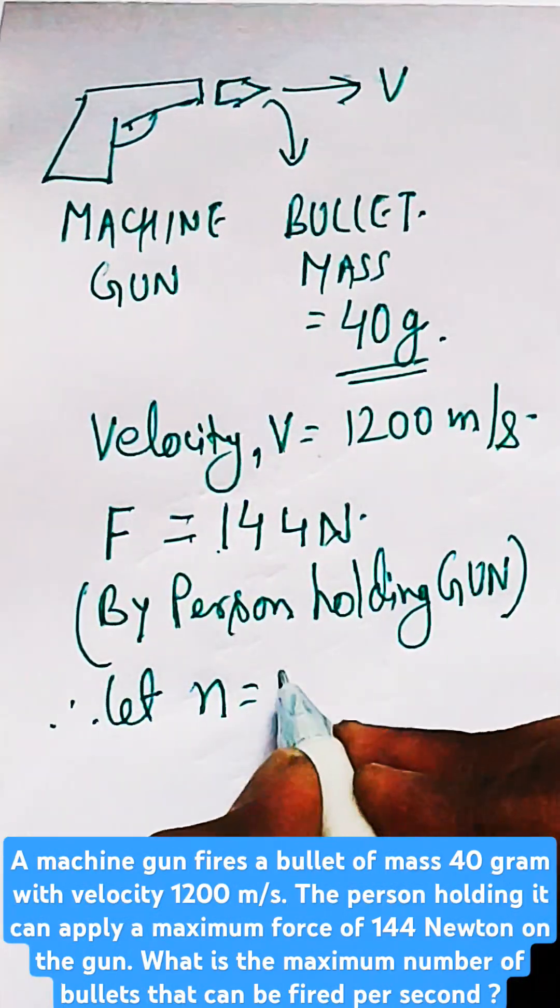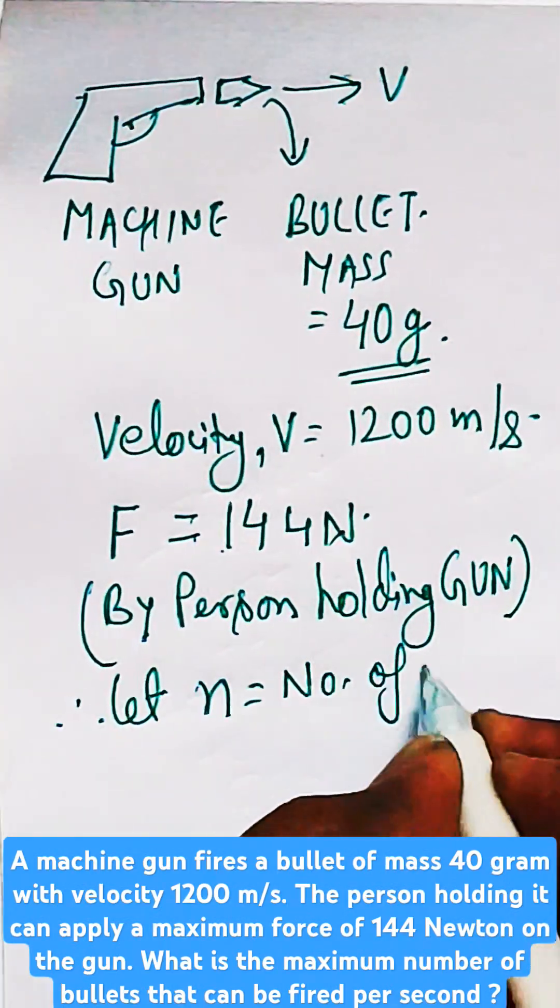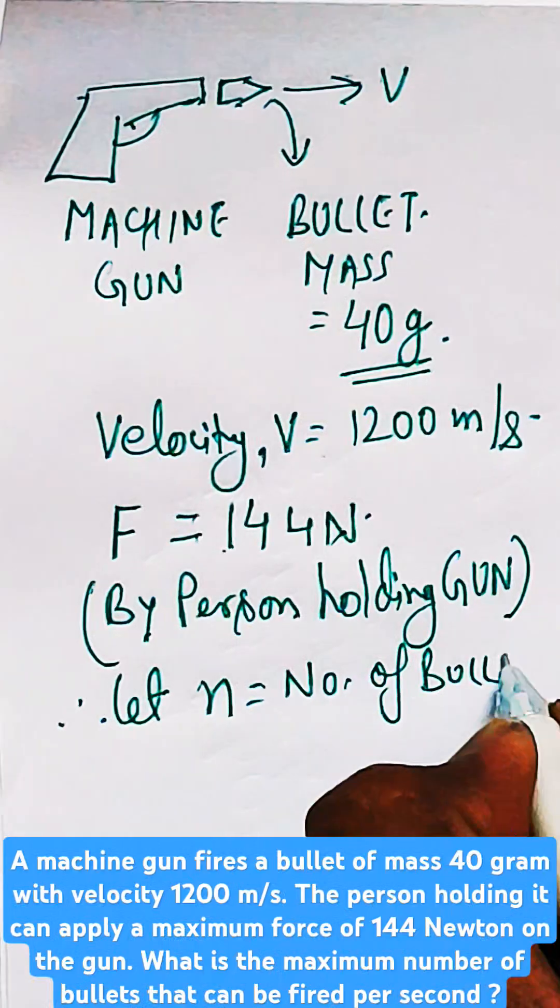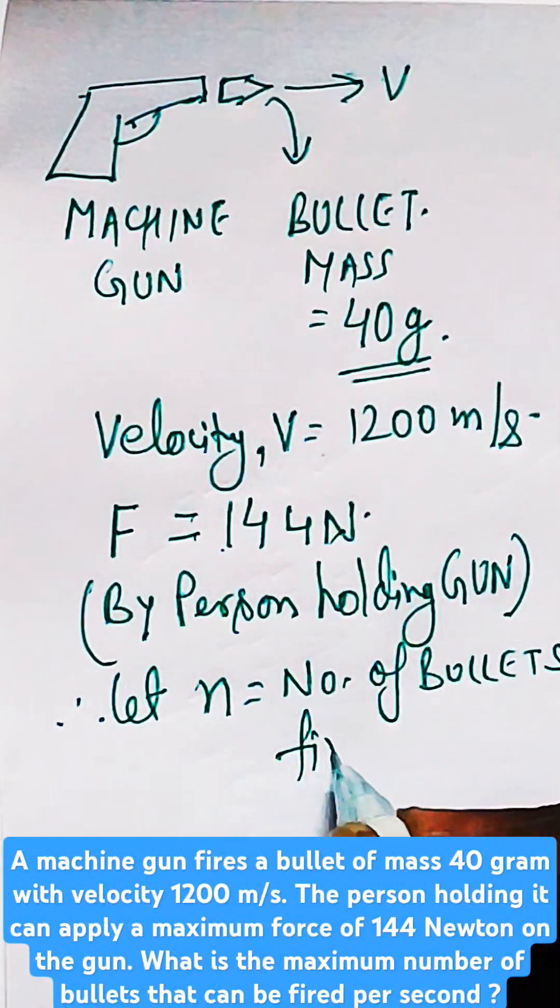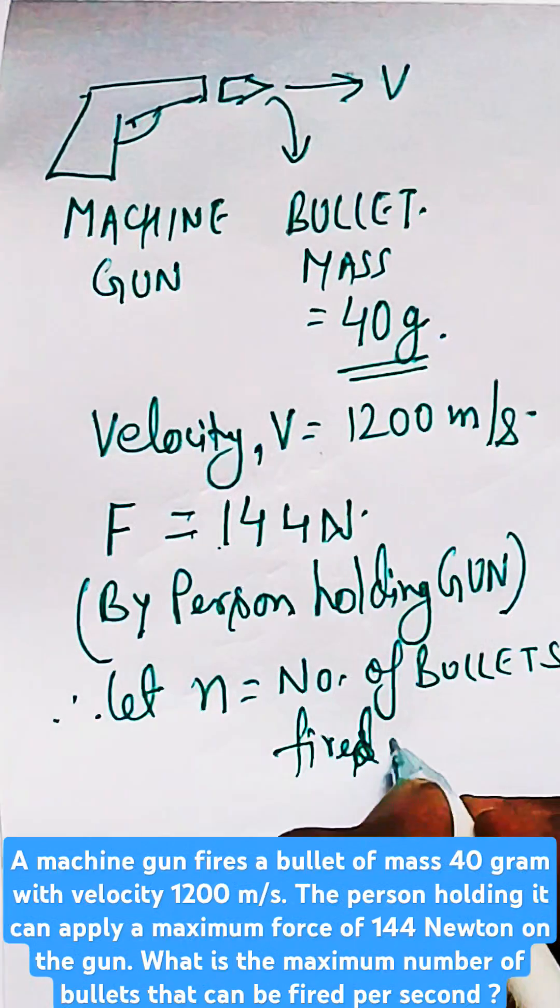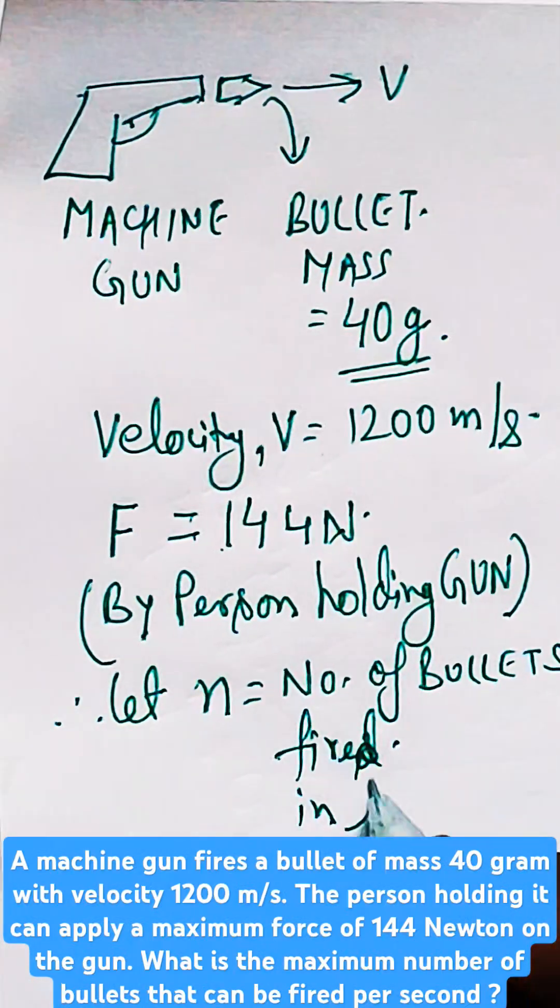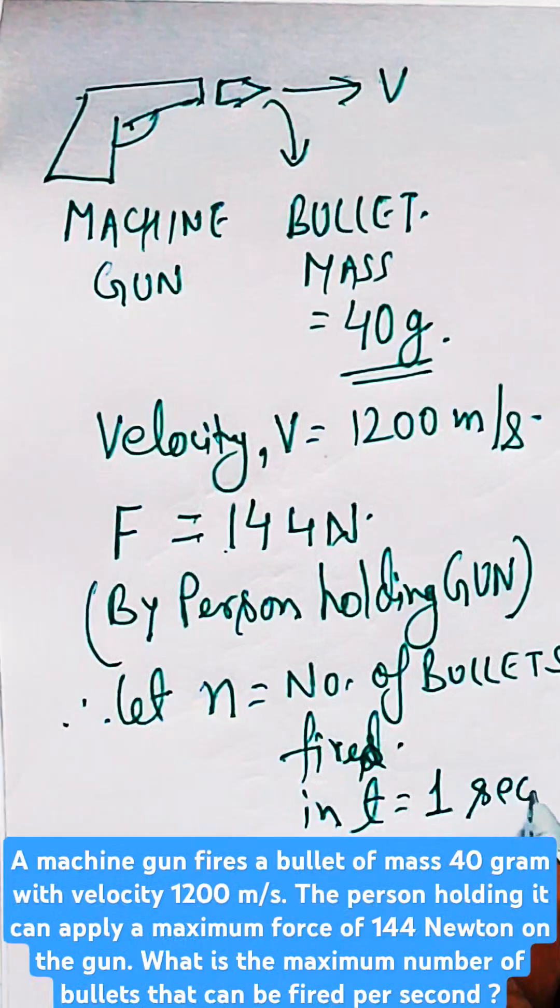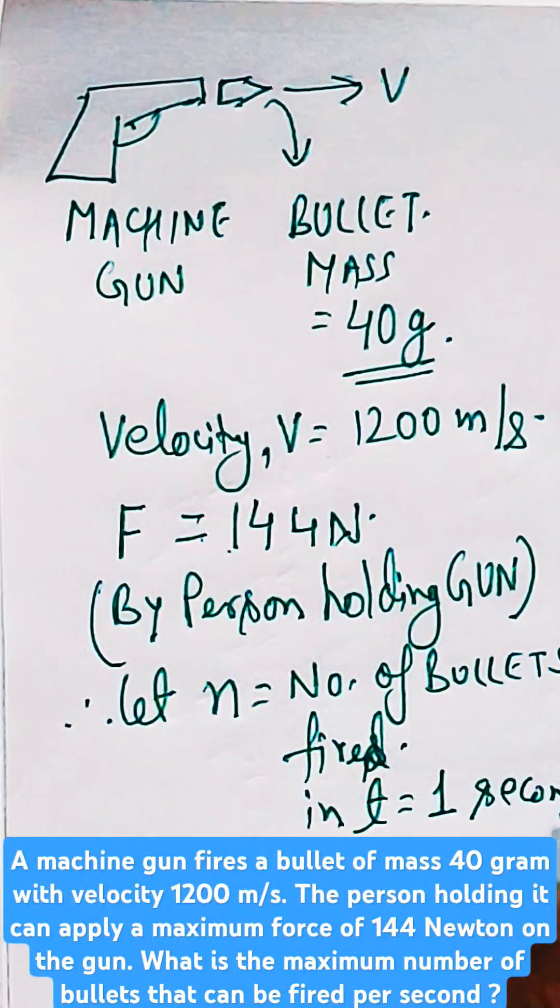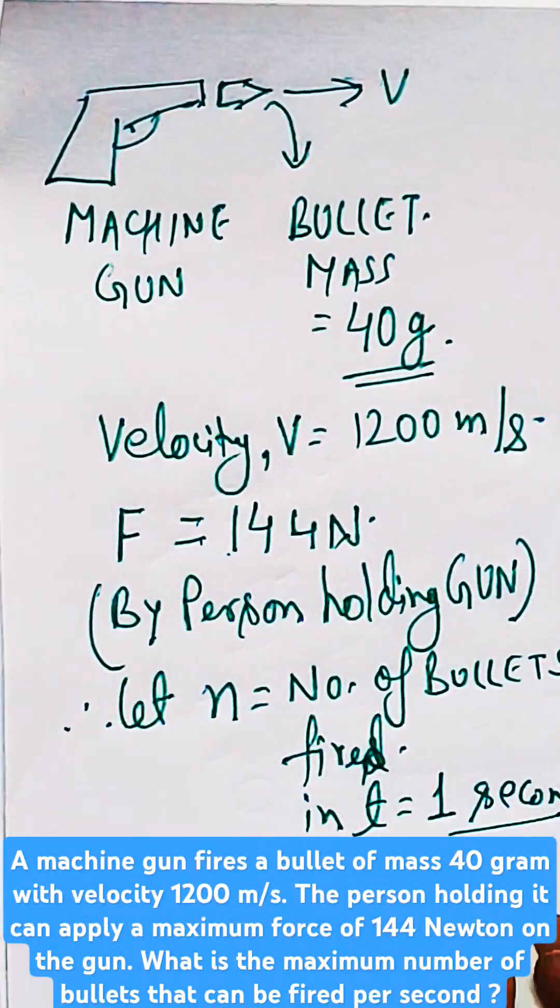If the man is holding the gun and firing from the machine gun, let n be the number of bullets which are fired in one second of time. We need to find the maximum number of bullets that can be fired per second, so let n equal the number of bullets which are fired in one second.